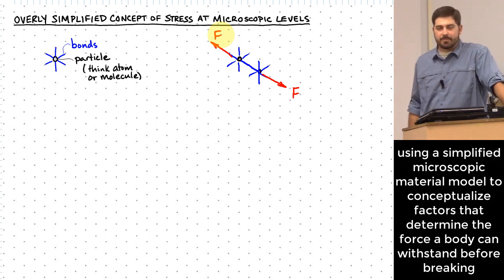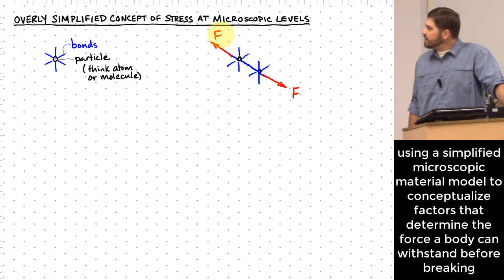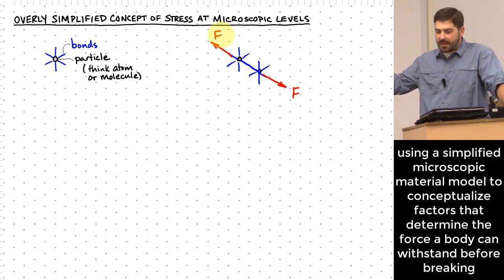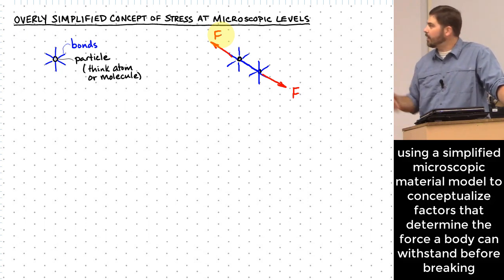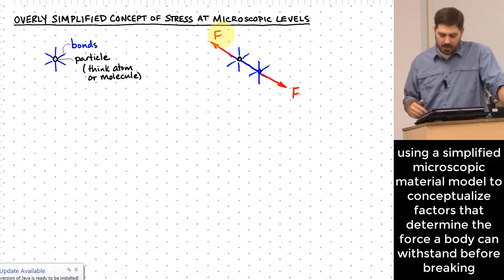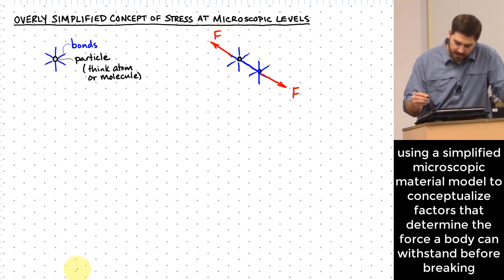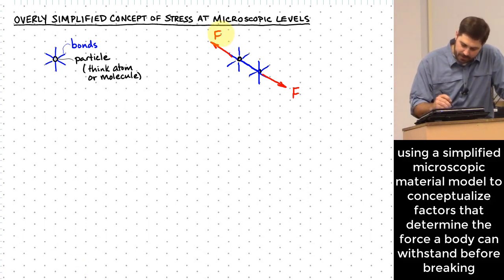Let's think about the next size up — a piece of material made of two particles. Here's a particle, and there's a particle, and we can think of there being all these bonds available. This bond happens between this particle and this particle. Let's think about applying a force to this one bond — exactly the amount of force that it takes to break that bond. Let me call that value F.